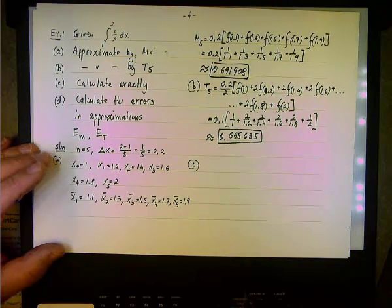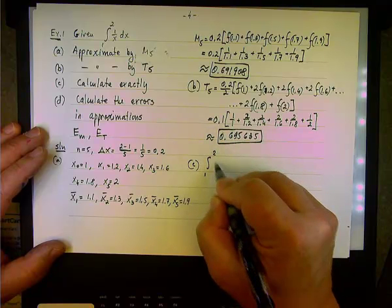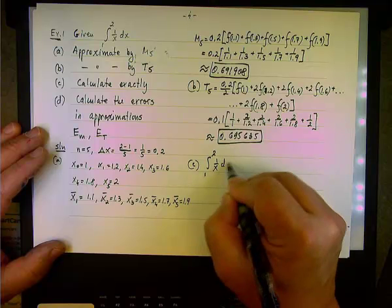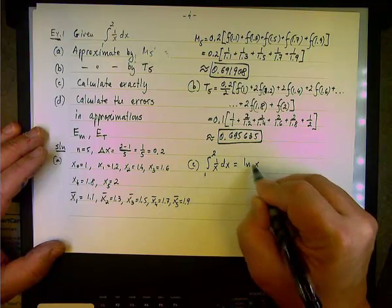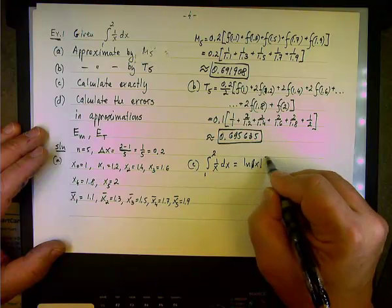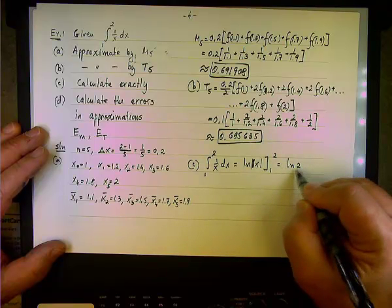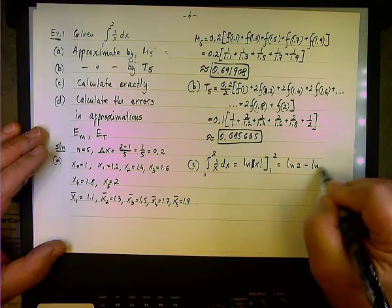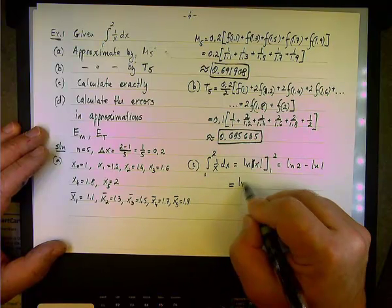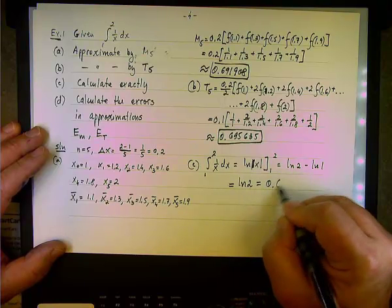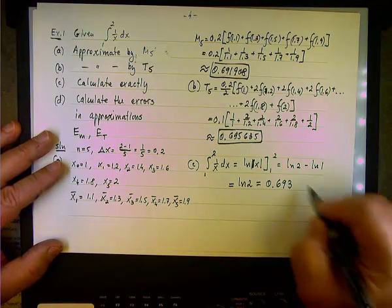The exact calculation, that's the easy one. In this case, the integral of 1 over x dx from 1 to 2 is the natural log of x evaluated from 1 to 2. So it will be the natural log of 2 minus natural log of 1. Of course, natural log of 1 is 0, so it's the natural log of 2. And plug in this value, 0.693147.